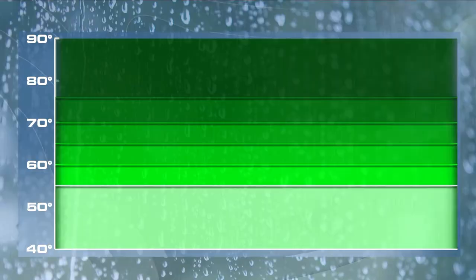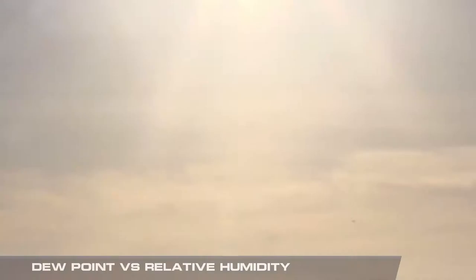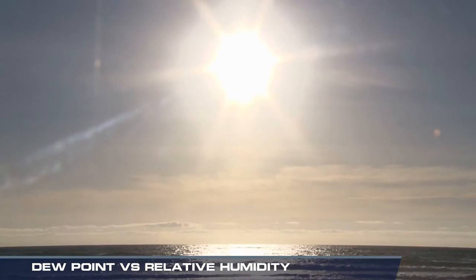Dew point is a measure of moisture in the atmosphere. The higher the number, the more moisture the atmosphere can hold. You probably pay closest attention to the dew point in the summer, because once it reaches 60 degrees and above, it's considered muggy, and 70 degrees oppressive.